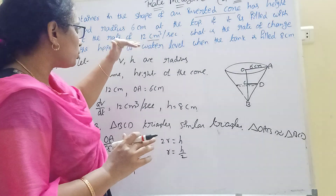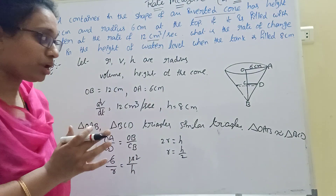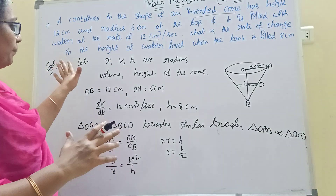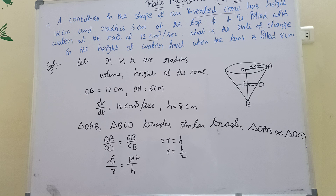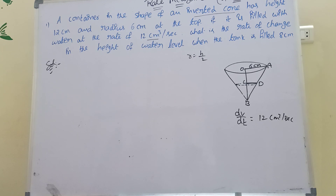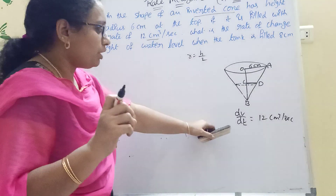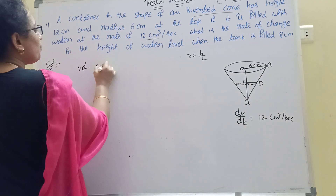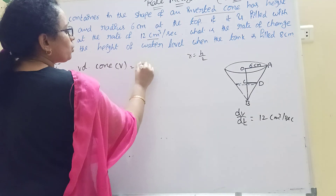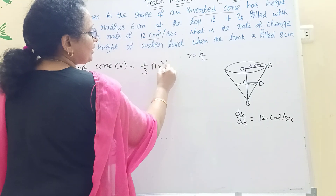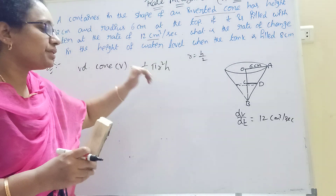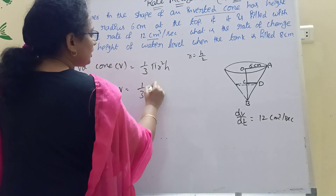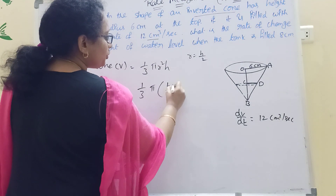Now apply this to the volume of cone formula. The volume of a cone is V equals one-third pi r squared h. We know r equals h by 2, so substitute: V equals one-third pi times (h by 2) squared times h.